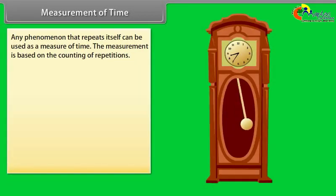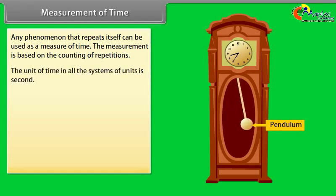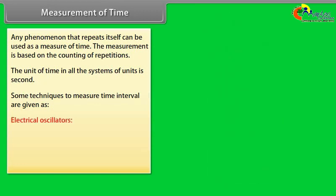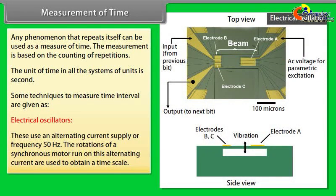Measurement of time. Any phenomenon that repeats itself can be used as a measure of time. The measurement is based on the counting of repetitions. The unit of time in all the system of units is second. Some techniques to measure time interval are given as: